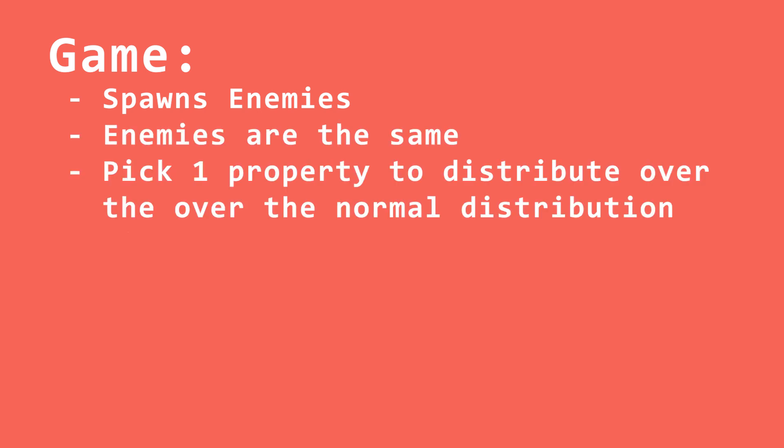So let's have a little example. Say we have a game that spawns in enemies, and all the enemies are exactly the same. We can pick one property of our enemies to distribute over the normal distribution. To add some variation, you could literally pick anything, but I'll choose speed.